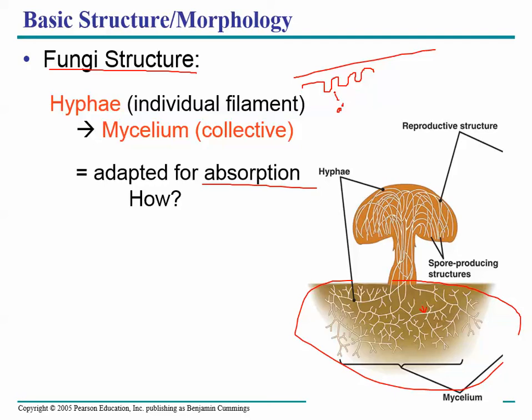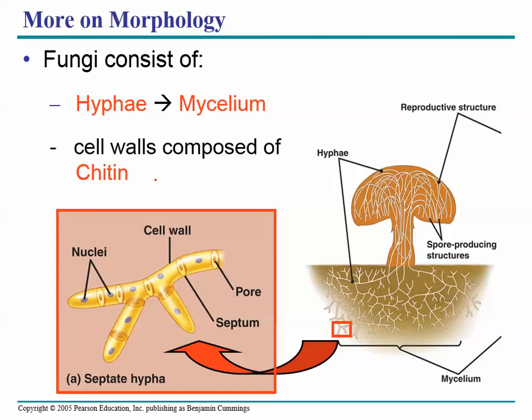The cell walls of a fungus are composed of chitin — this word looks like 'chitin' but it's pronounced 'kytin.' Let's do a little review: bacterial cell walls are made out of peptidoglycan. Plant cell walls are made of cellulose. And fungal cell walls are made out of chitin.